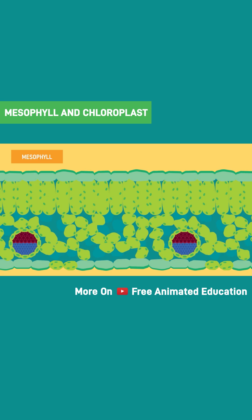Palisade parenchyma cells are column-shaped cells which are tightly packed. They help in carrying out photosynthesis.